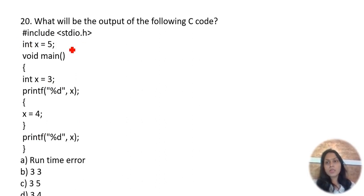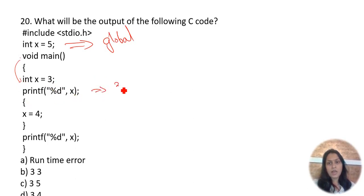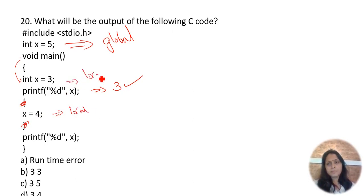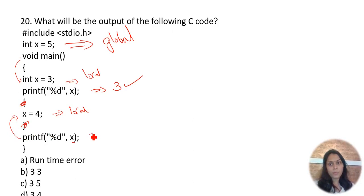What will be the output? x is declared globally. Inside main, int x=3 is a local variable — printf prints 3. Then another block declares x=4 (also local). The printf inside main takes the local value, so 4 is printed. Final output is 3 then 4 — option D is correct.